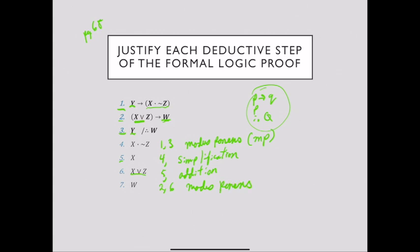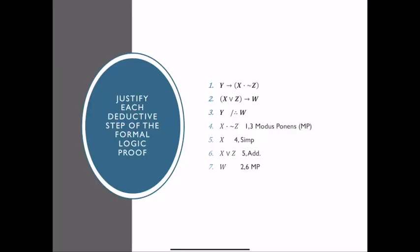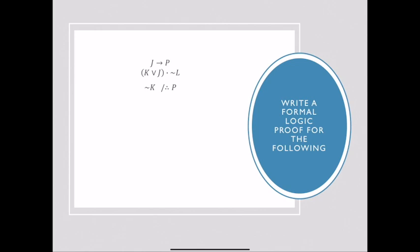I did go ahead and type up every step so you guys can see it and check your answers. Next, I'm going to write a formal logic proof. If I'm given that J implies P and K or J and not L, and I'm given not K, I'm going to somehow prove that all of that gives us P. So I go ahead and I write down all of my givens.